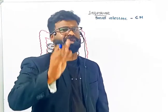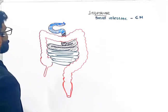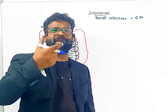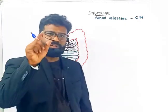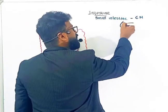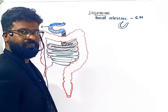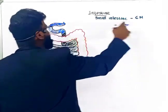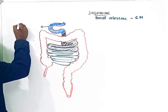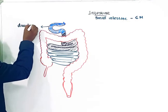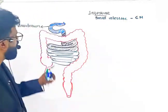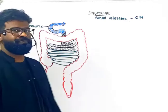The small intestine consists of three regions. The small intestine begins with a C-shaped or U-shaped region. Your NCERT book states it is the C-shaped region. This beginning C-shaped or U-shaped portion of the small intestine is called the duodenum.